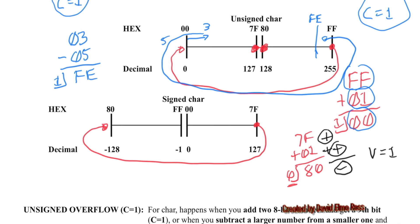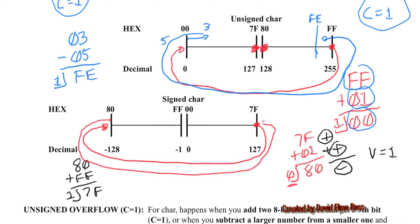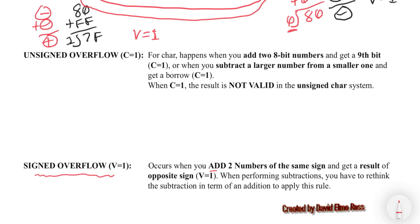On the other side, 80 plus FF ends up being 7F plus a carry, so it doesn't work on the unsigned line. But pictorially on the signed line, we were as far in debt as possible, went another dollar in debt, and now have all the money — because we added a negative plus a negative and got a positive. A signed overflow where V equals 1 occurs if you add two numbers of the same sign and get a result of opposite sign.